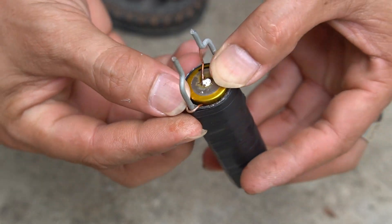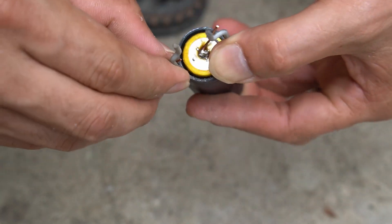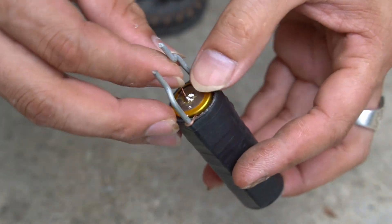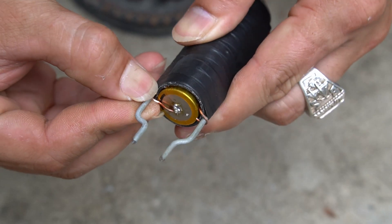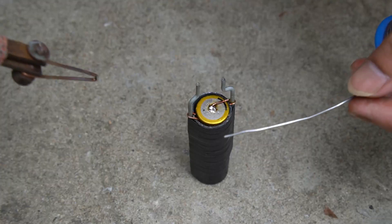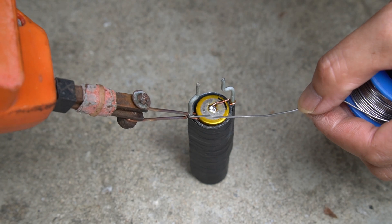Next, wrap the two copper wires tightly around the two ends of the steel wire. Use a soldering iron to solder the joints tightly.